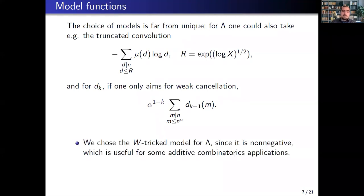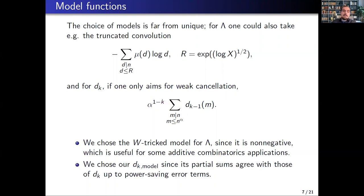The reason we chose these particular models: for the von Mangoldt function, first it's easy to compute correlations of the W-trick function, and second it's a non-negative function, which is helpful for applications to additive combinatorics — in the theory of Gowers norms you need pseudorandom majorants and non-negative functions are much easier to work with. For d_k, we chose our model because with it you can get power-saving error terms, though simpler models could be used if you don't need that quality.